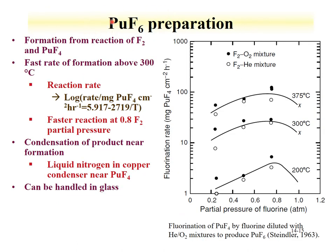The hexafluoride, which is volatile, can be prepared from the reaction of the tetrafluoride with difluorine. The reaction rate is quite fast. The fluorination rate increases about an order of magnitude from 200 to 300°C. The reaction rate equation shows clear dependence upon temperature. This material can be handled in glass, so the degree of fluorination from the plutonium hexafluoride is relatively low.